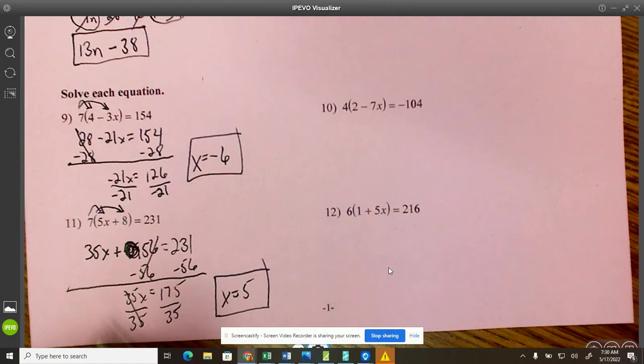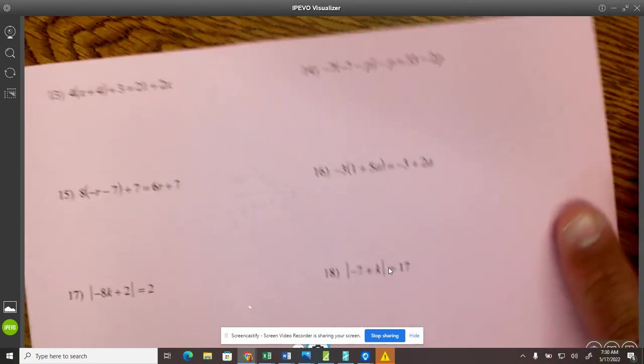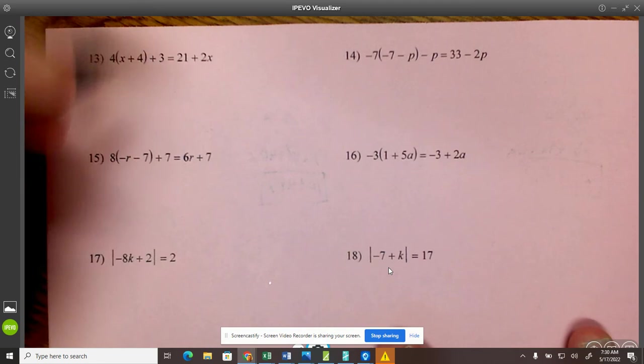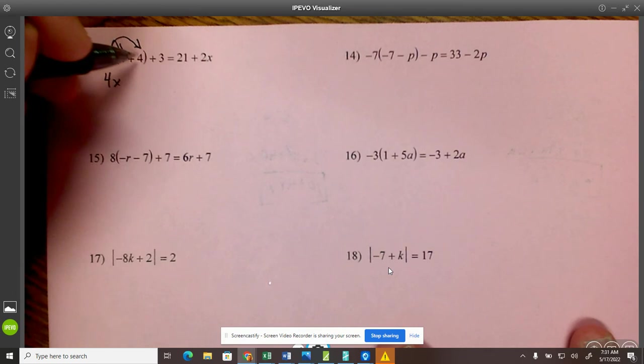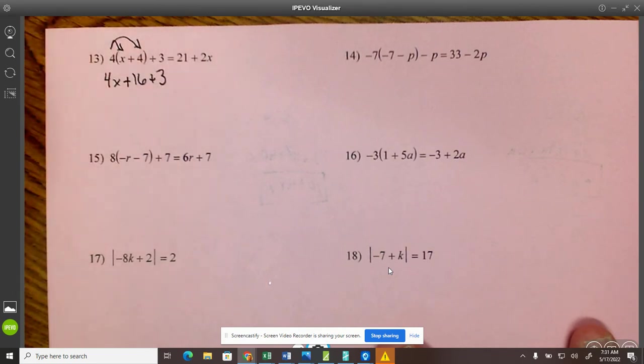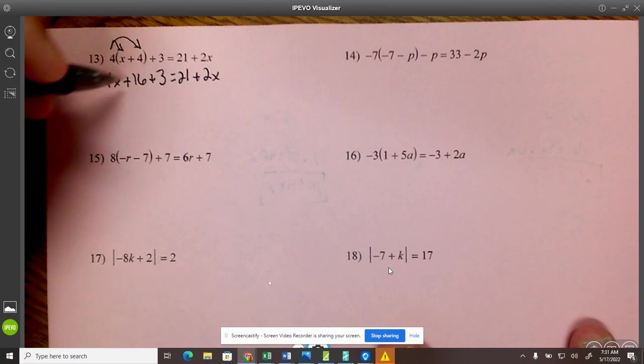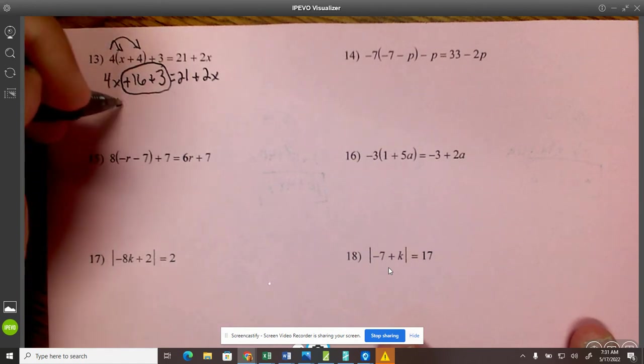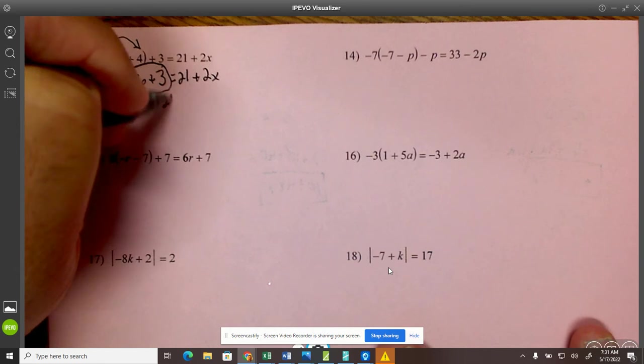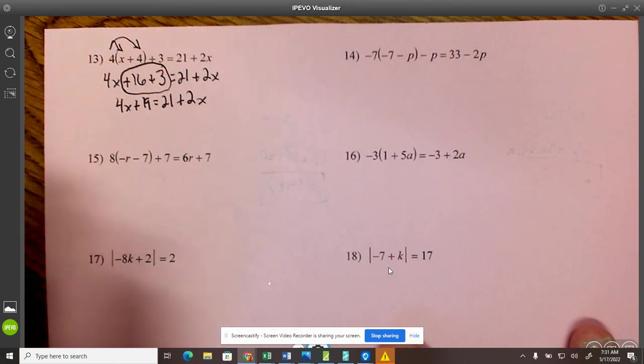So distribute and then solve it like a two-step equation. All right. Let's look at number 13. It's a little bit different. So I'm still going to distribute. I have to take care of that first. You always distribute first. 4 times x is 4x. 4 times 4 is 16 plus 3 equals 21 plus 2x. Now I'm going to combine like terms. 16 plus 3 I can combine. This right here. They're the same thing. So 4x plus 19 is 21 plus 2x. Now you can move anything you want. It doesn't matter. It should work as long as you keep on moving the right thing.